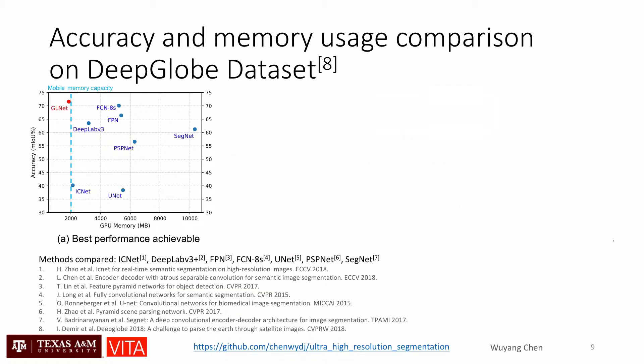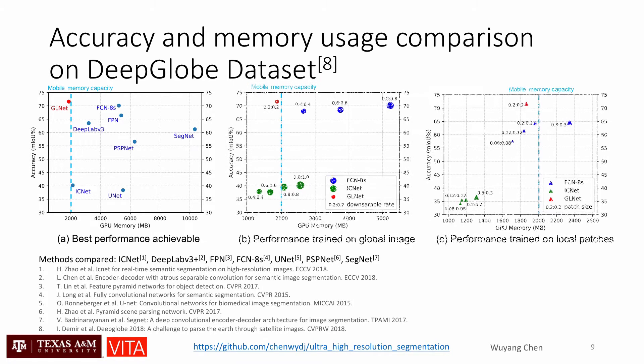Our GLNet achieves the best trade-off between accuracy and memory usage, which locates in the top left of the plot. While other state-of-the-art models achieve high mIoU, they consume very high GPU memory. We also select FCN and ICNet for in-depth evaluations, and results show that they achieve poor trade-off with either global images or local patches.